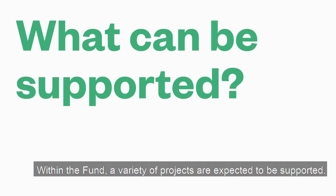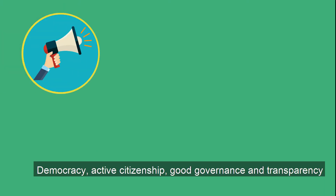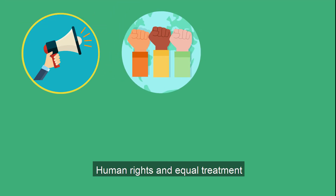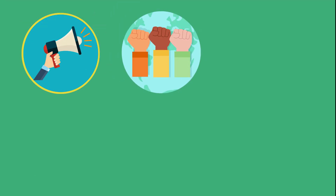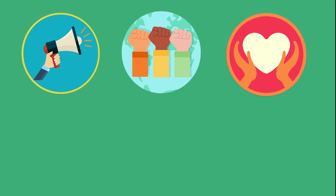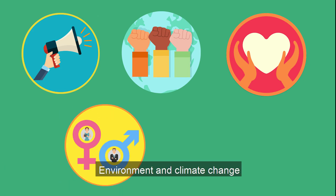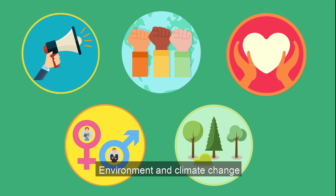Within the fund, a variety of projects are expected to be supported. These projects would fall under one or more of the following areas of support: democracy, active citizenship, good governance and transparency; human rights and equal treatment; social justice and inclusion of vulnerable groups; gender equality and gender-based violence; and environment and climate change.